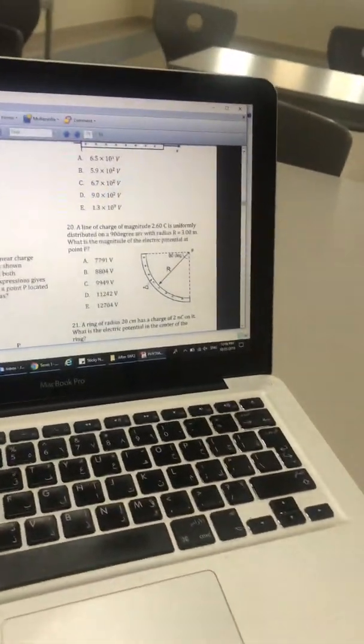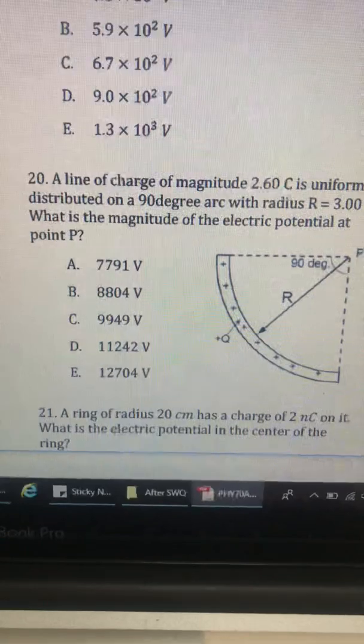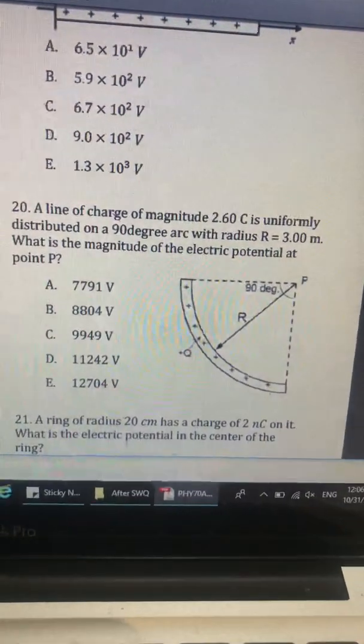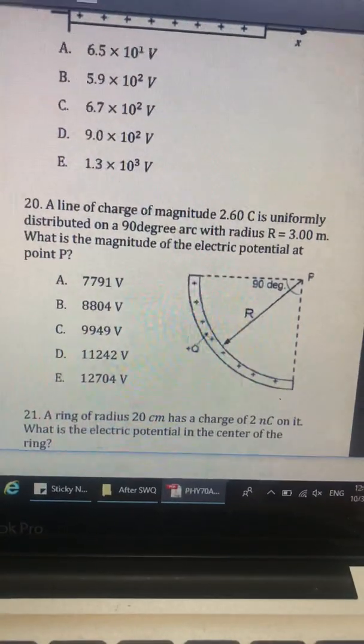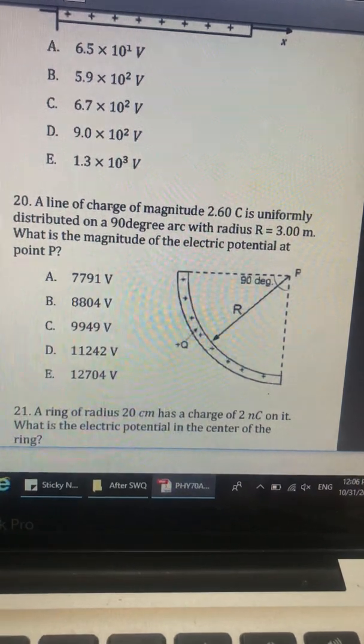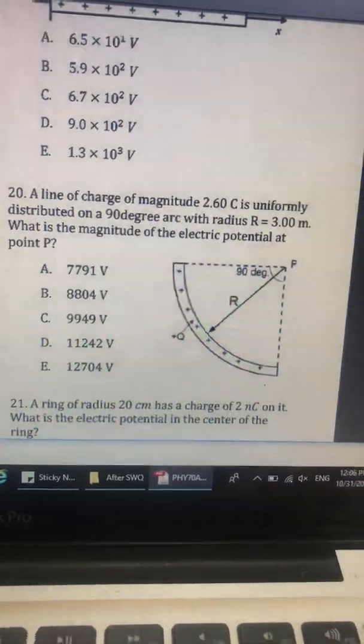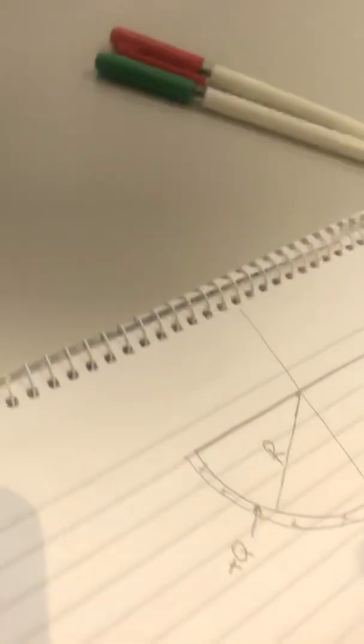Assalamu alaikum my shabab. Ms. Bla, for this question, a line of charge will give us the charge in volume distributed in 90 degrees, R quad radius 3 meters. What's the magnitude of the electric potential at point B? Ok, let's try to solve the question here.